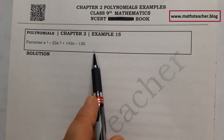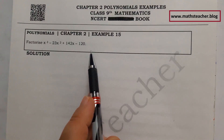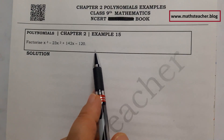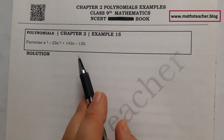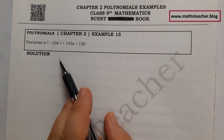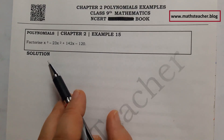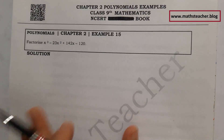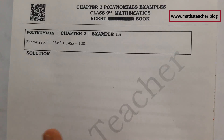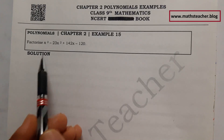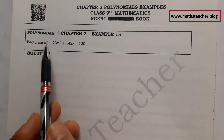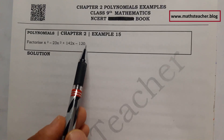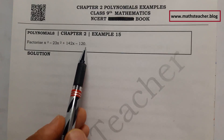As we have done questions 13 and 14, there was a specific method — either you would use the factor theorem or the splitting method. Now you will see here there is no specific method; you can either divide or use the factor theorem.